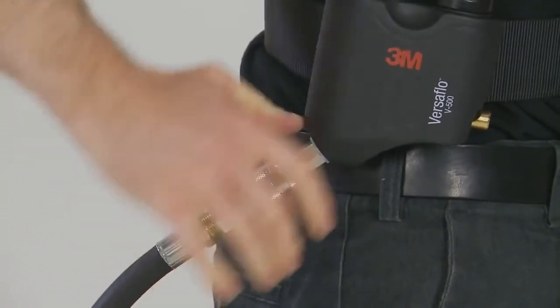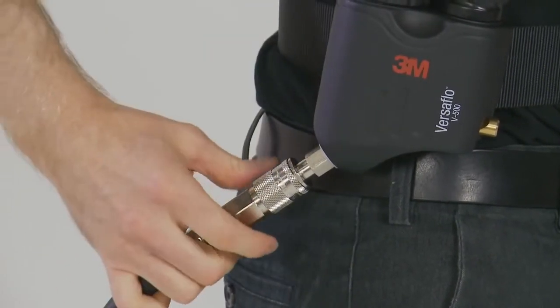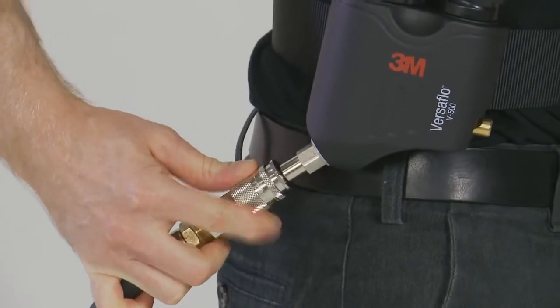Note, after use, the cast can be disconnected by pushing the socket towards the regulator and pulling the collar back. This double action releases the coupling.